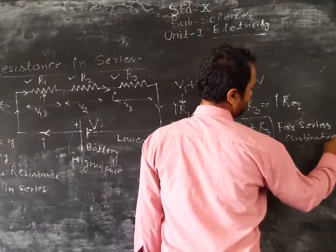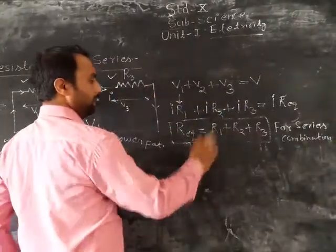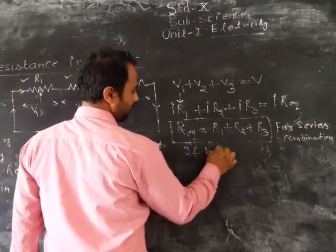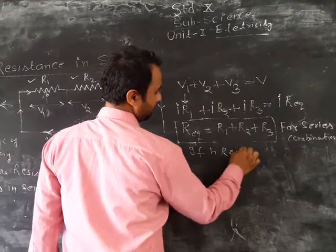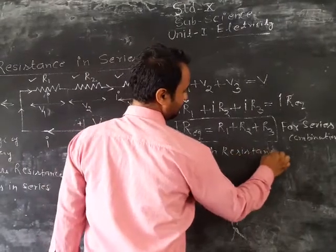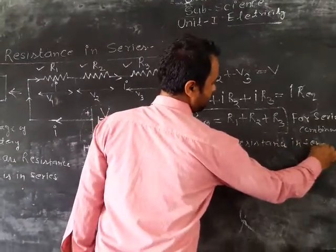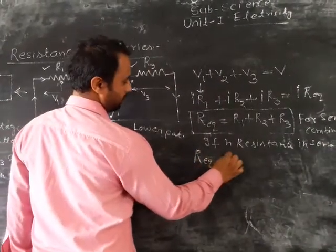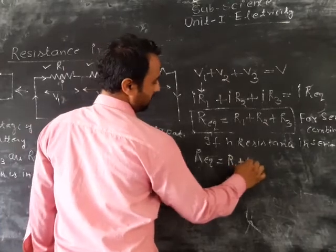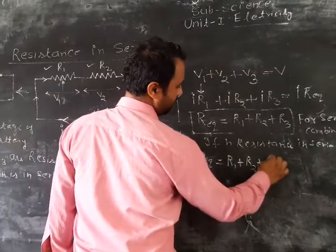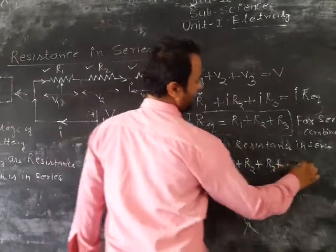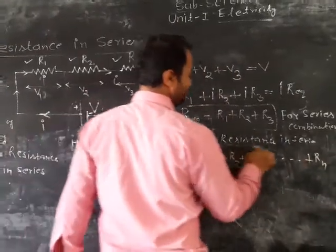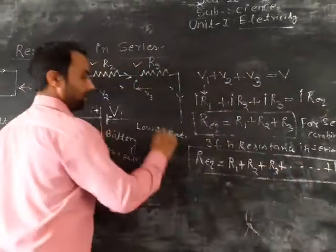If n resistances are connected in series, then R_equivalent = R1 + R2 + R3 + ... + Rn. This is the formula we use for the series combination.